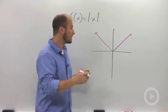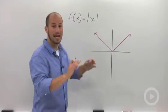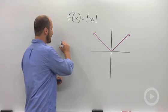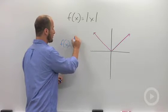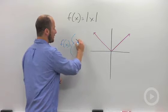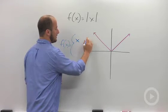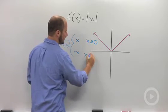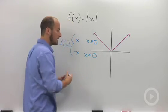So really what we can do is define this function as two separate pieces. We can say f(x) equals x if x is greater than or equal to zero, or negative x if x is less than zero.